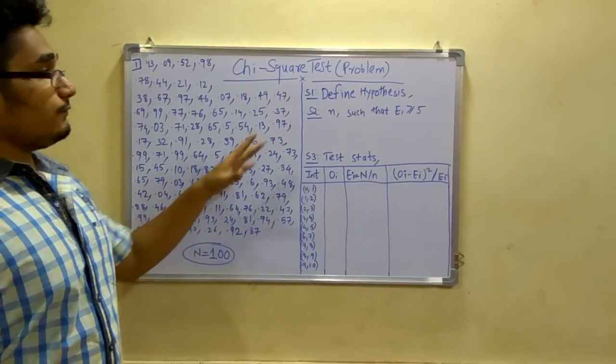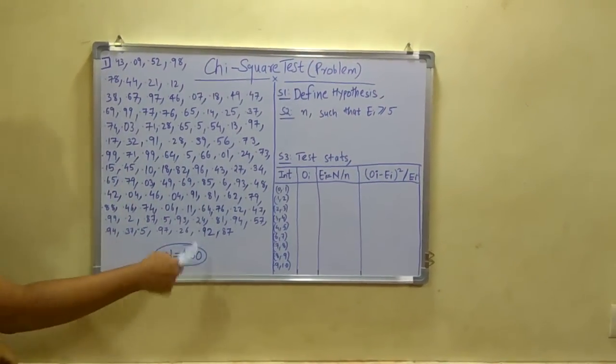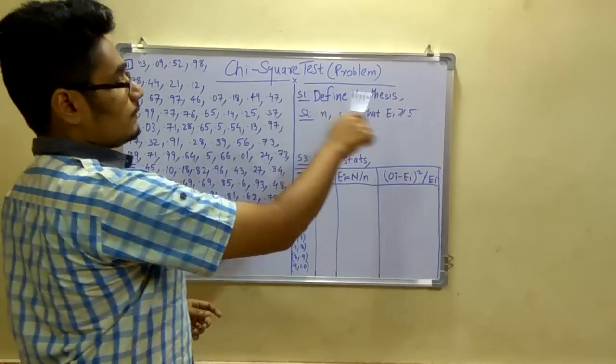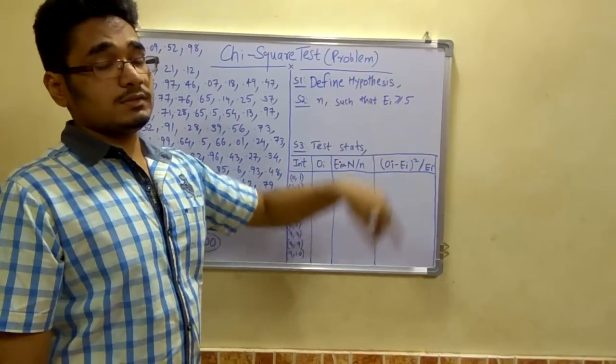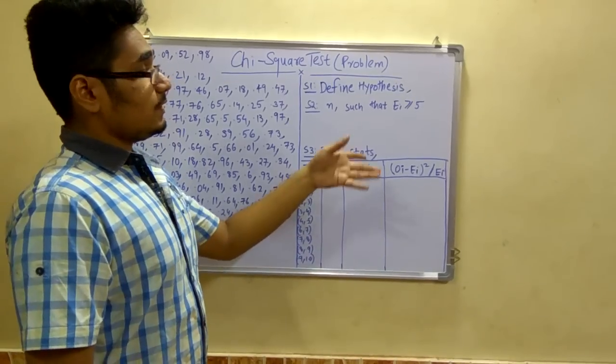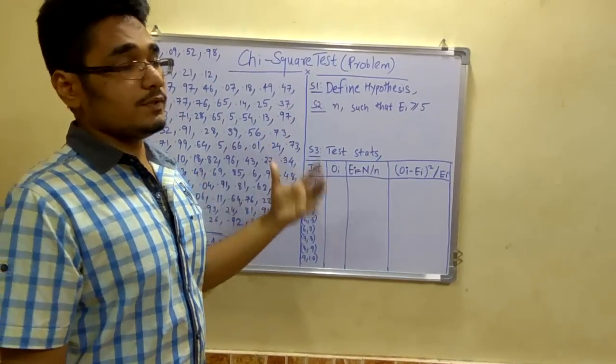First you can see here there are 100 numbers, so first you have to define the hypothesis. This hypothesis remains the same as the KS test, or you can refer to my previous video based on the algorithm.